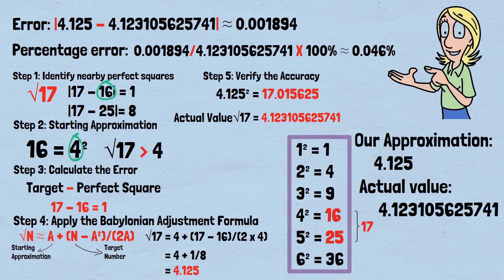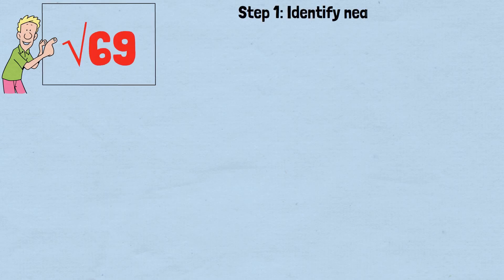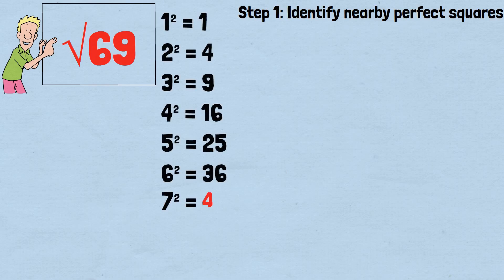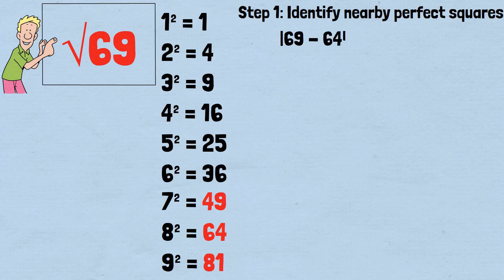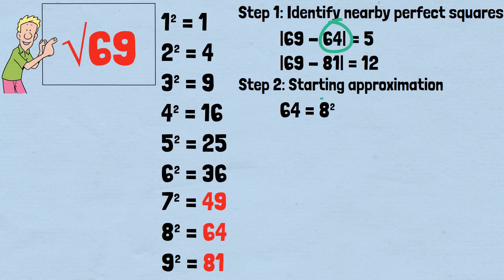Let's try another example: finding the square root of 69. Step 1: identify nearby perfect squares — 7²=49, 8²=64, 9²=81. Since |69−64|=5 and |69−81|=12, we use 64 as our closest perfect square. Step 2: starting approximation — since 64=8², our starting approximation is 8.